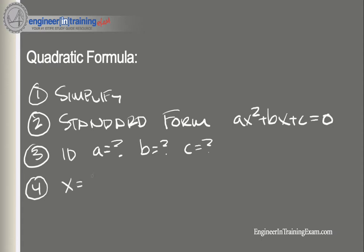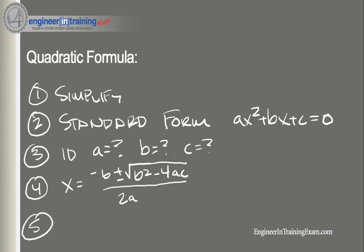Once we identify a, b, and c, we move to step four: take the quadratic formula, which is x equals negative b plus or minus the square root of b squared minus 4ac, divided by 2a. We plug our values of a, b, and c into this formula. Step five: simplify the result into whole numbers if possible.